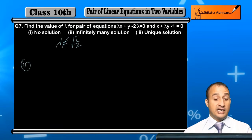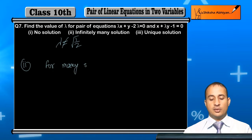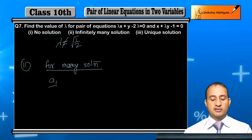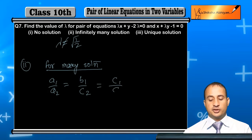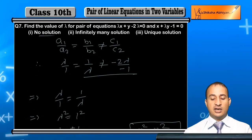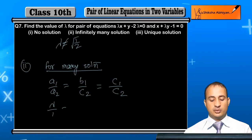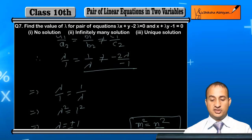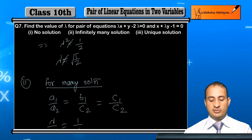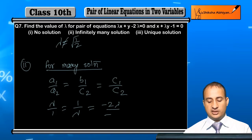For infinitely many solutions, the condition is: a1 upon a2 equals b1 upon b2 equals c1 upon c2. Substituting our values: lambda by 1 equals 1 by lambda equals minus 2 lambda by minus 1. Simplifying the last ratio, the minus signs cancel to give 2 lambda.